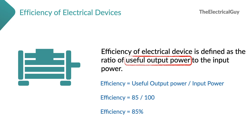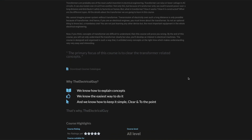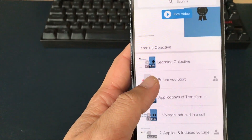Not only motors — you can also consider any other electrical devices including power transformers. Power transformers also do not have 100% efficiency. They also suffer from different losses, they also suffer from heating issues, and hence their efficiency is also not 100%. If you would like to study transformers in detail, you can check out the course designed by me on transformers — you will get all the details in the description of this video.